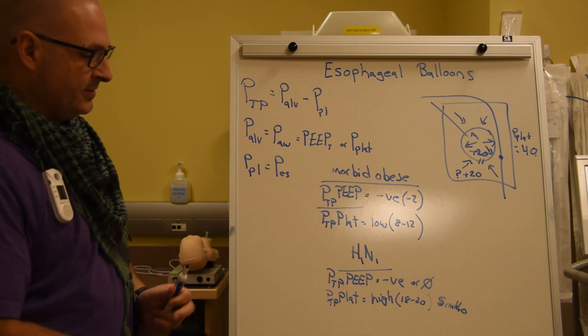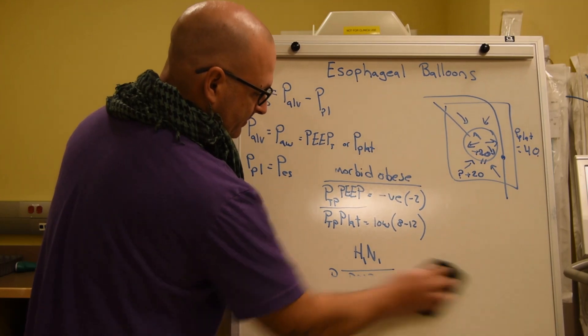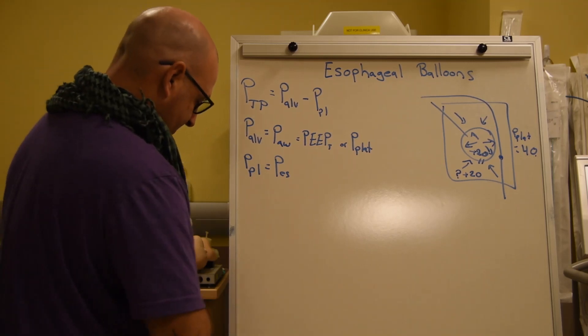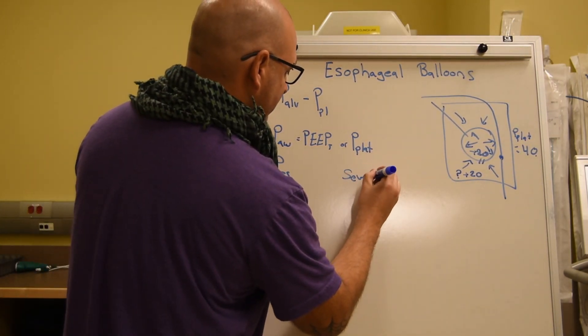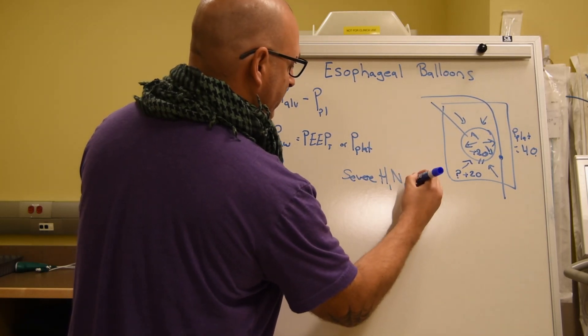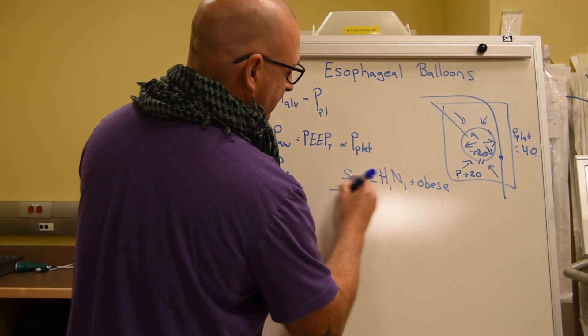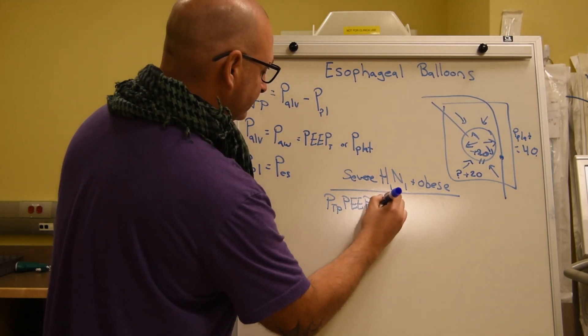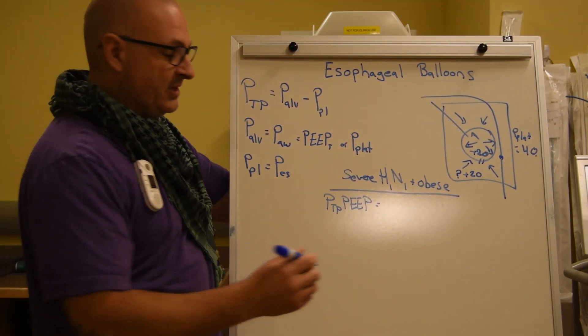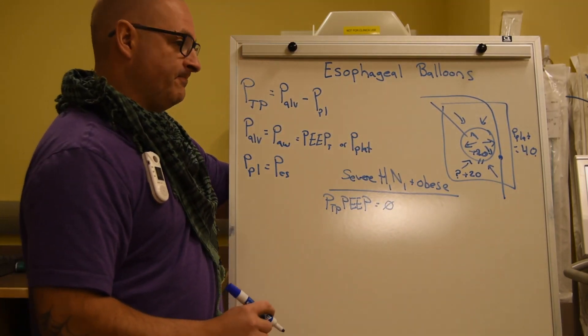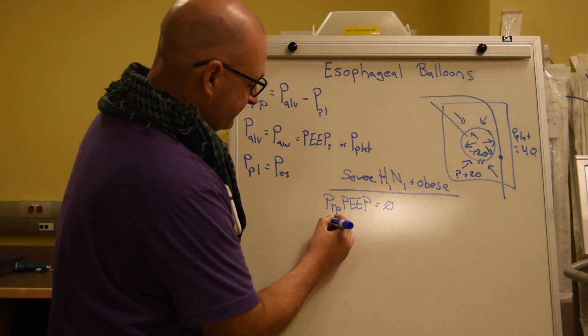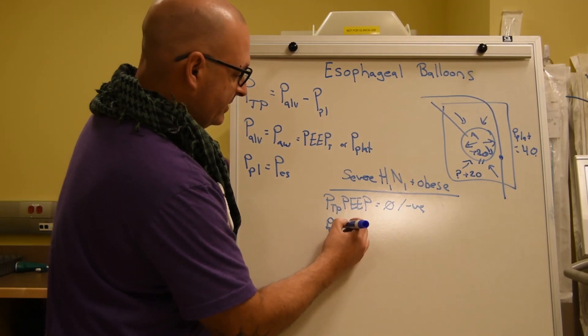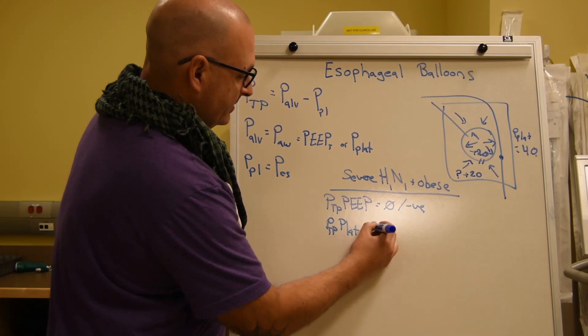Then we go to our worst case scenario. Let's say it's a severe H1N1 and obese. Well, if you're lucky, you'd be hitting your target. But you never know, you could be negative. And then you go to check their plateau and you find it's 30.